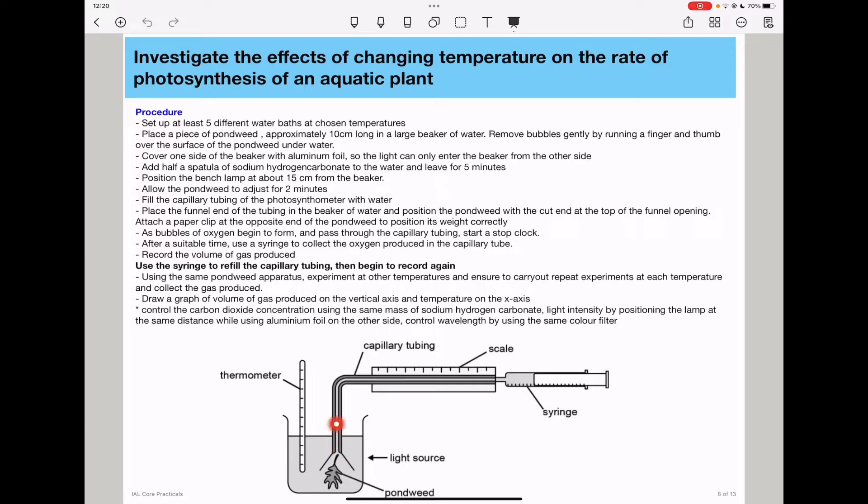The capillary tube is filled with water, and on the other side we have a syringe that is going to collect the volume of gas produced. We have positioned the light source on this side, and you will put aluminum foil covering the beaker on this side to prevent light from coming into this direction. That ensures that the plant is exposed to a controlled amount of sunlight.